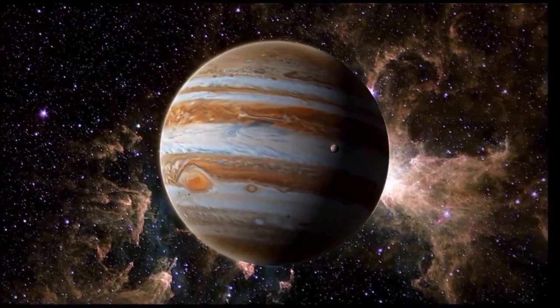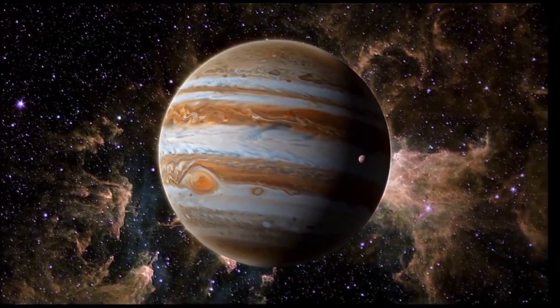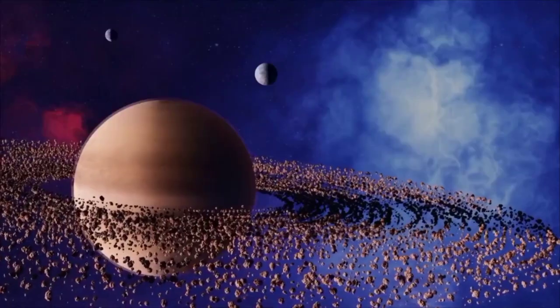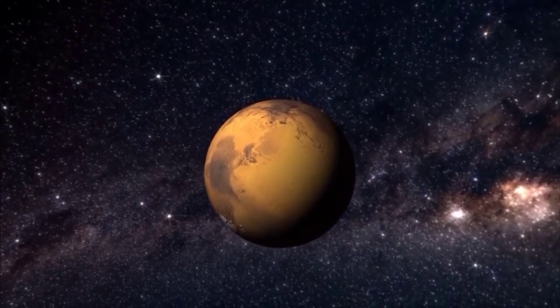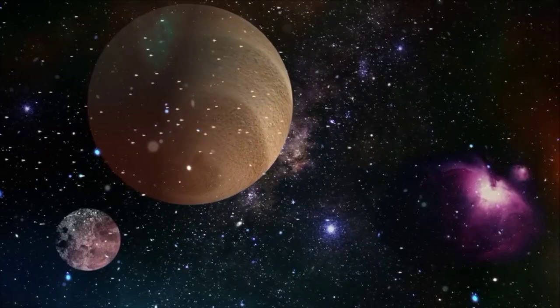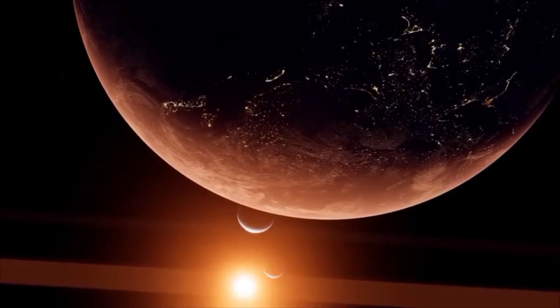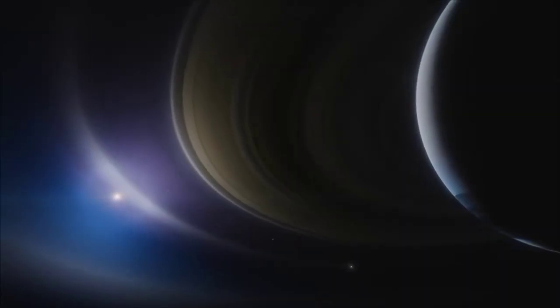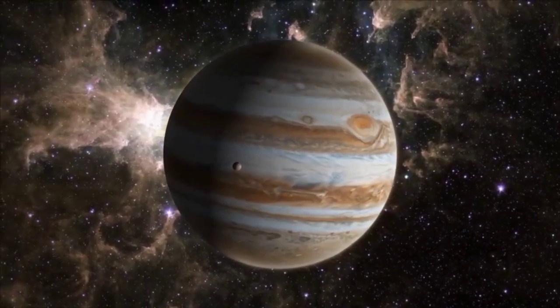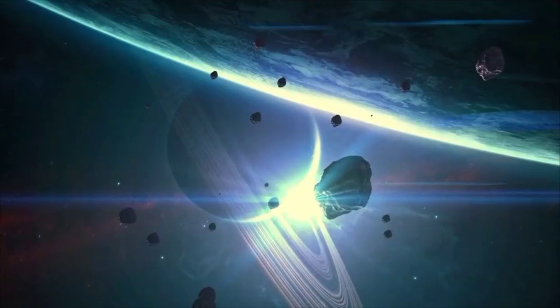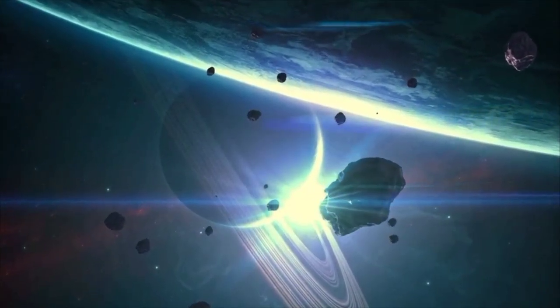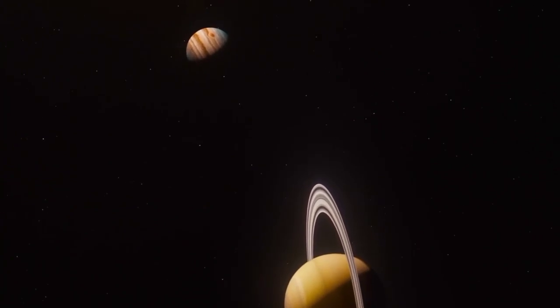Pluto, once considered a planet in its own right, is now classified as a dwarf planet due to its unusual orbit. Despite its reclassification, Pluto remains a subject of interest and research within the scientific community. Recent investigations by leading astronomers indicate that Pluto's orbit is dangerously close to Neptune's, raising concerns about the possibility of a catastrophic collision. But how could such a crash happen?